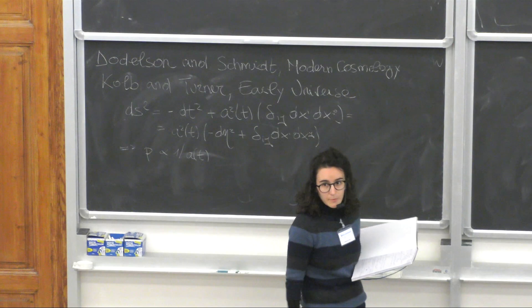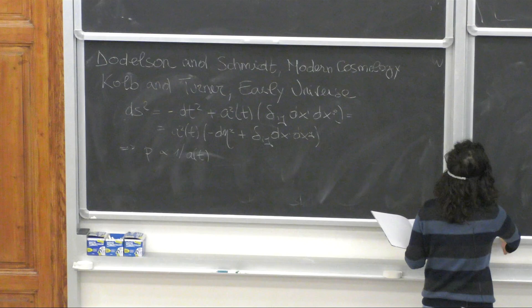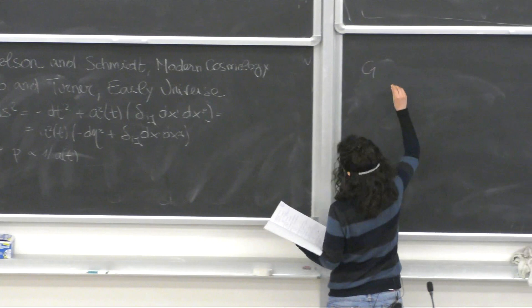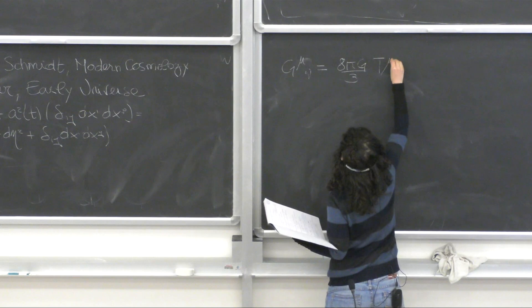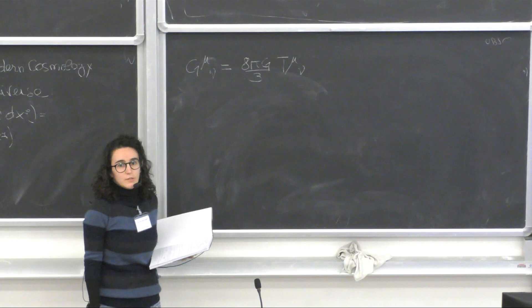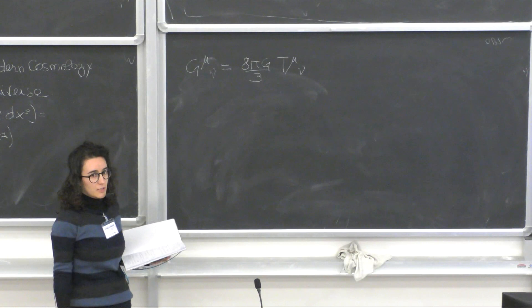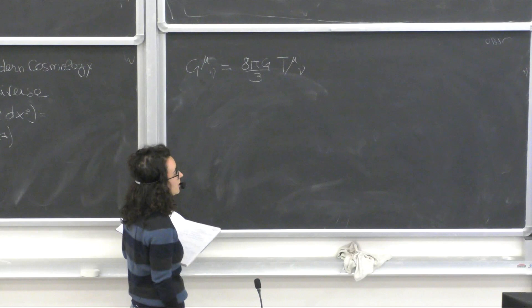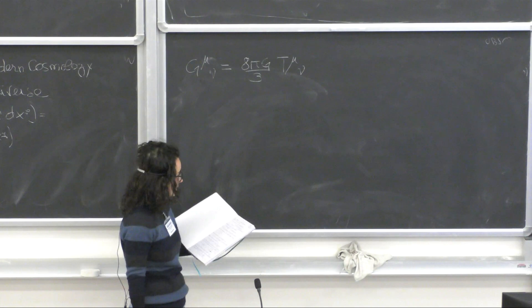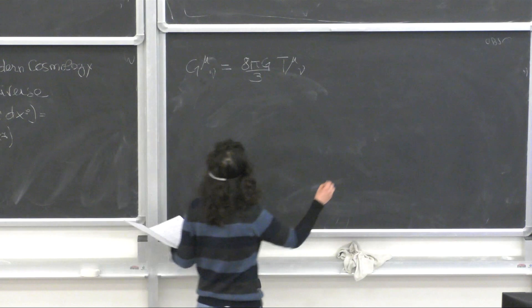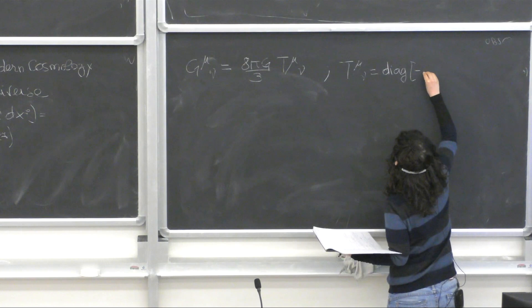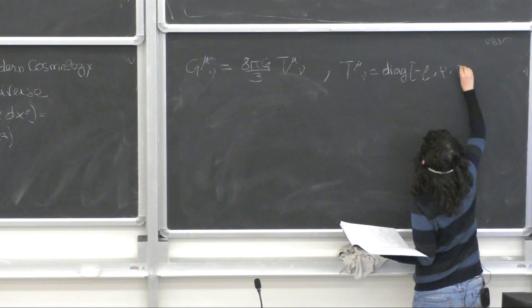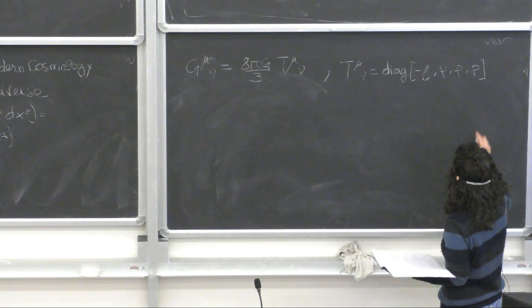Moving to the dynamics of this background cosmology, we can derive it from the Einstein equations that you have already seen in the lecture by Leonardo this morning. The Einstein equations allow us to connect the metric and the energy content of the universe — the metric encoded on the left-hand side and the energy content in the stress-energy tensor. The stress-energy tensor for a homogeneous and isotropic universe takes a very simple expression: it is simply diagonal, with the energy density as the first entry and then the pressure in the other entries.